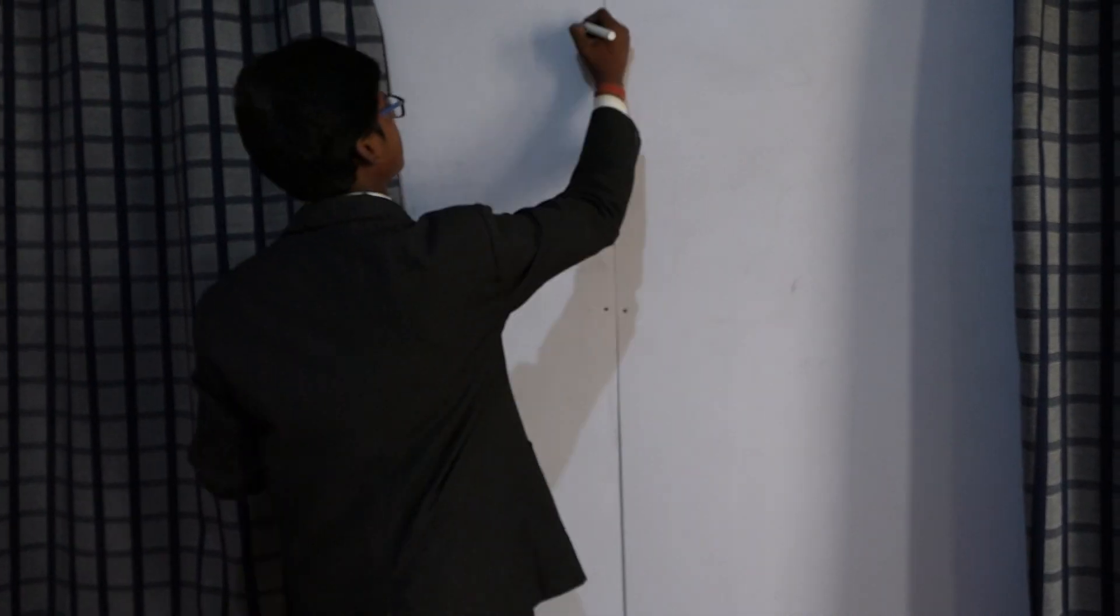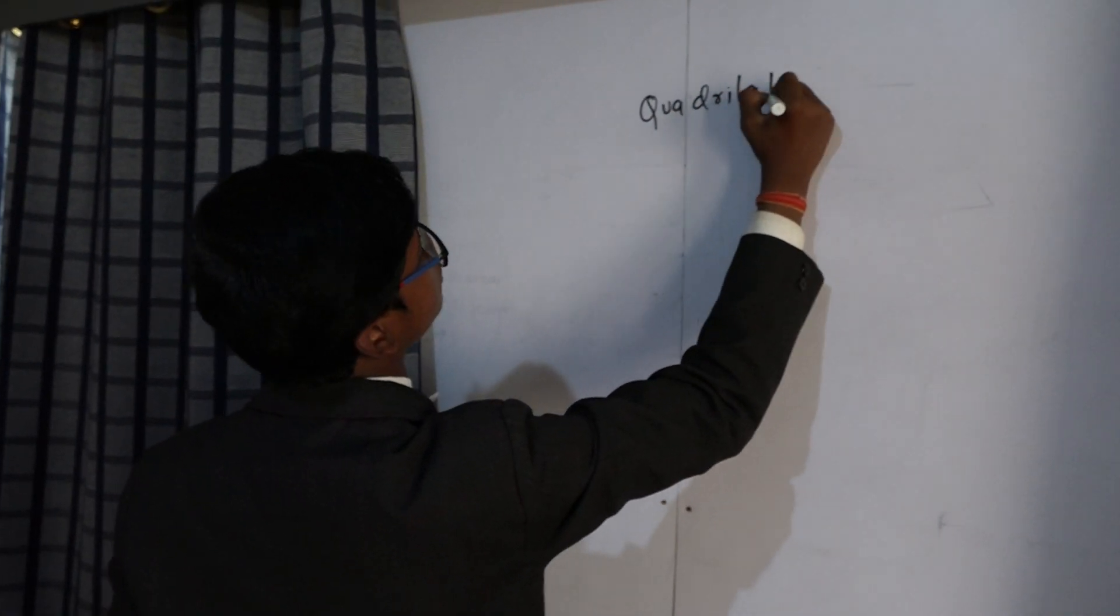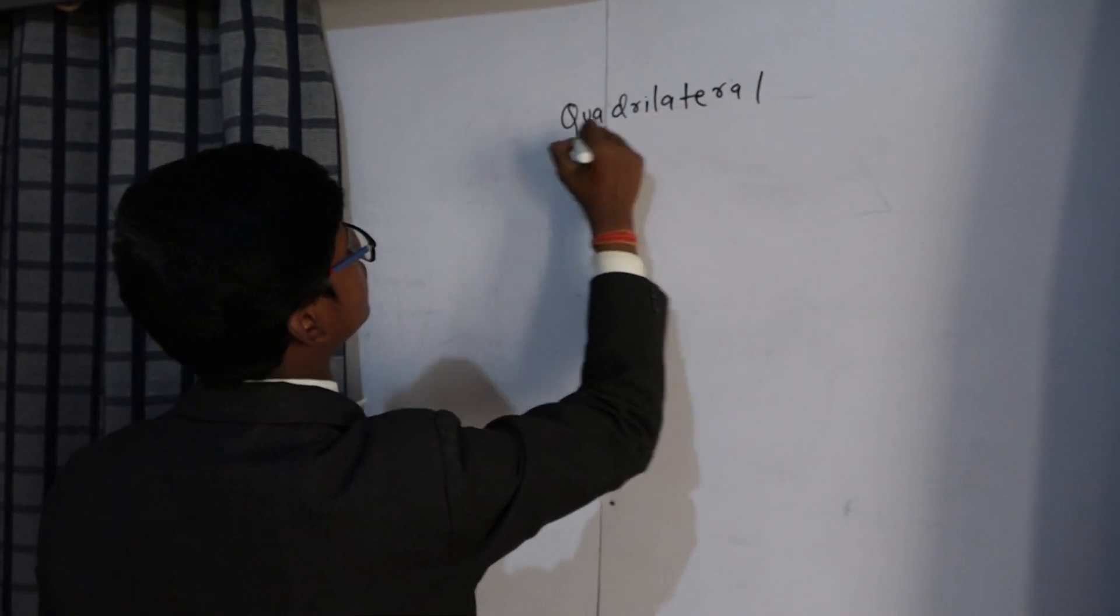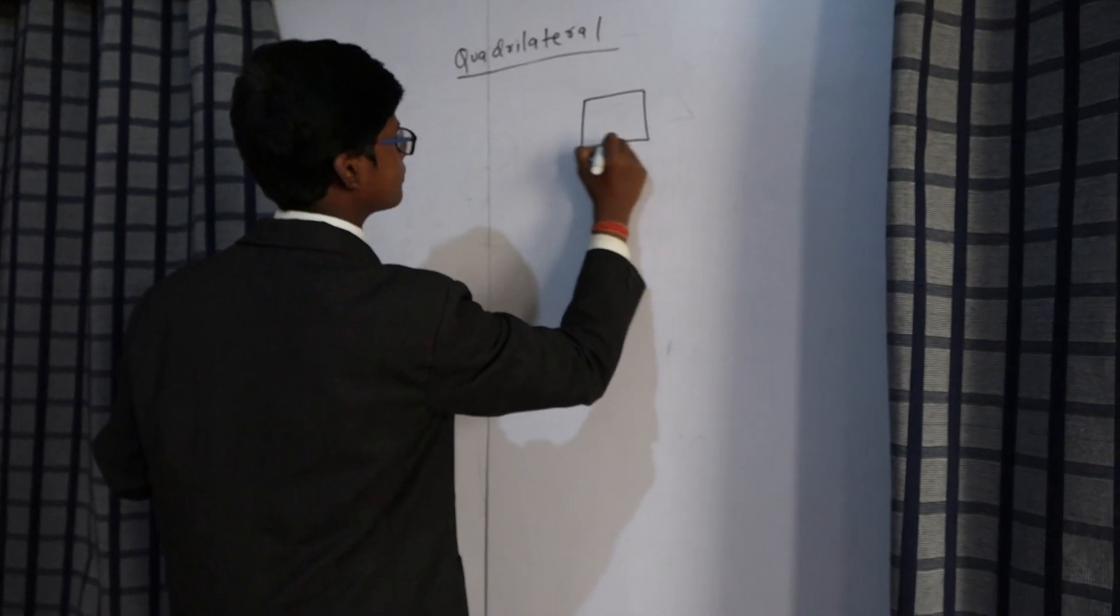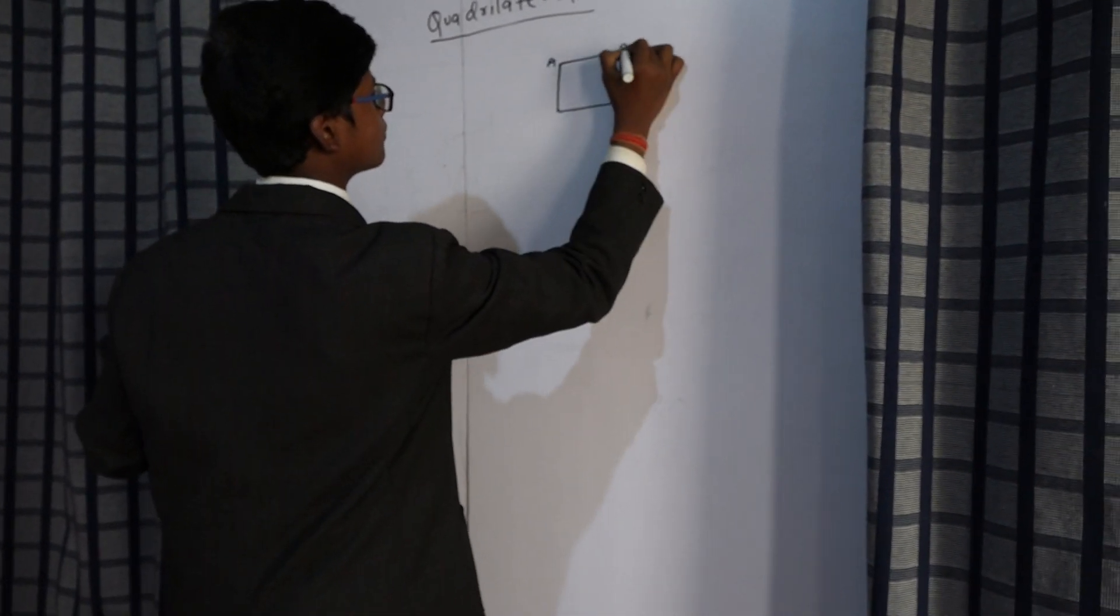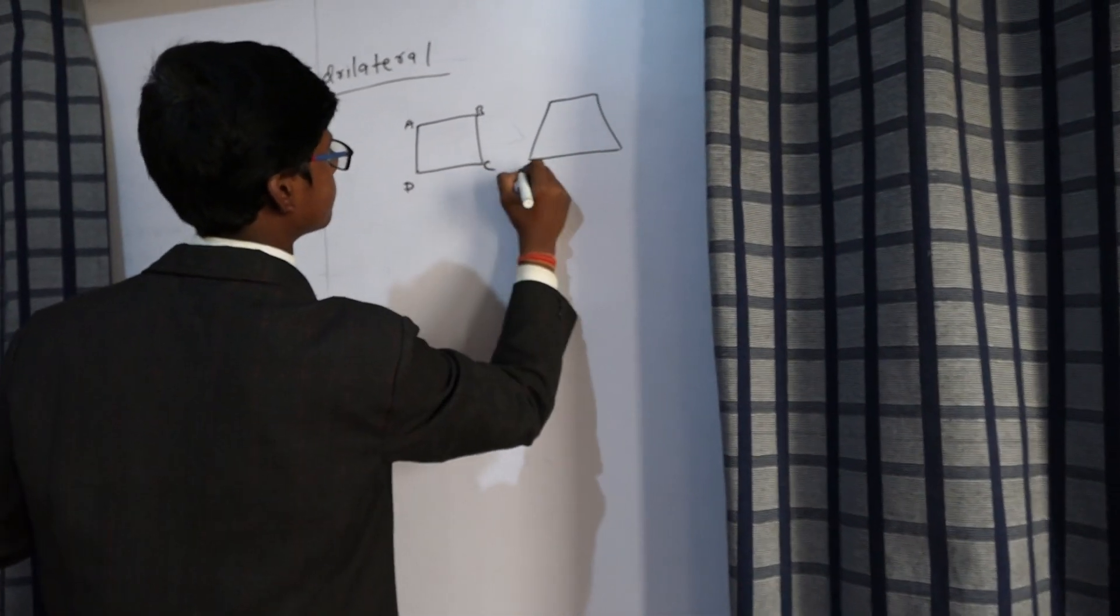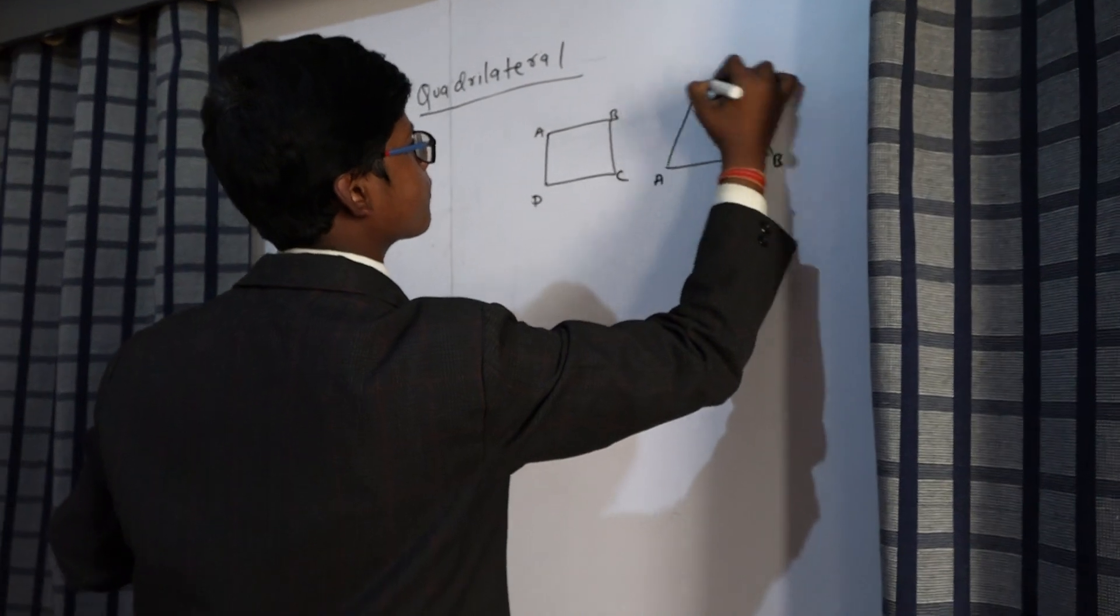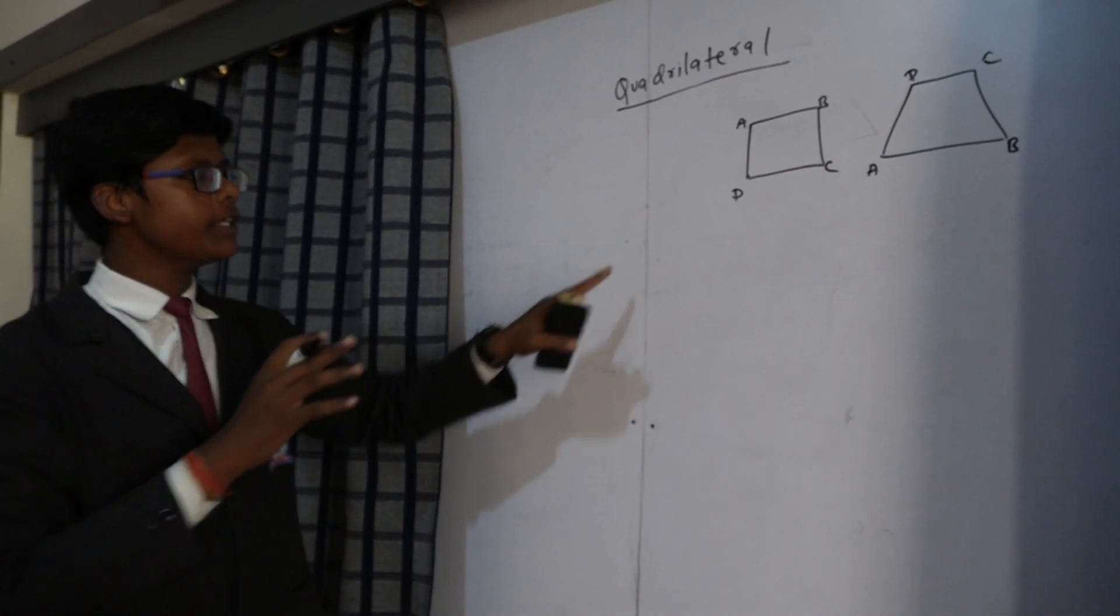I'm from Archie International School, class 9th. Today I am going to explain about quadrilaterals. Simply, a quadrilateral is a four-sided bounded figure. For example, these are examples of quadrilaterals.